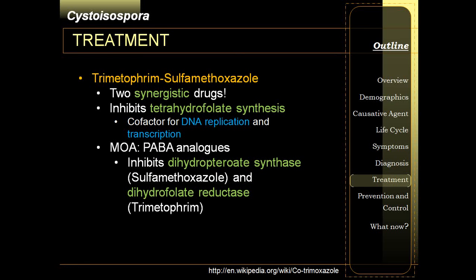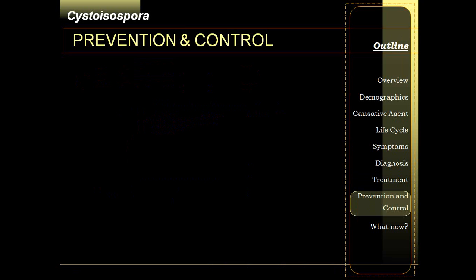Treatment is very similar to Cyclospora — co-trimoxazole, or trimethoprim-sulfamethoxazole. Co-trimoxazole is highly effective against a lot of protozoans, so if you are thinking of an antibiotic with a lot of anti-protozoan activity, the first drug to think of is co-trimoxazole. For prevention and control, you have to figure out how to prevent and control the cysts based on its life cycle and symptomatology.